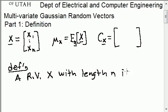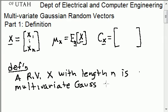A random vector x with length n is multivariate Gaussian. Sometimes I'm going to say multivariate Gaussian because I want to explicitly remind you that it's a vector, but sometimes if I just say Gaussian and you know it's a vector, then it's the same as if I had said multivariate Gaussian.